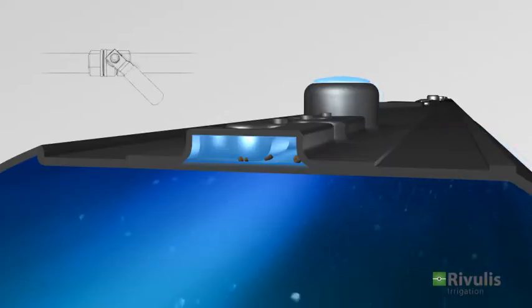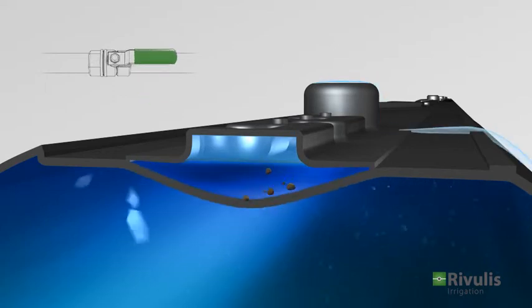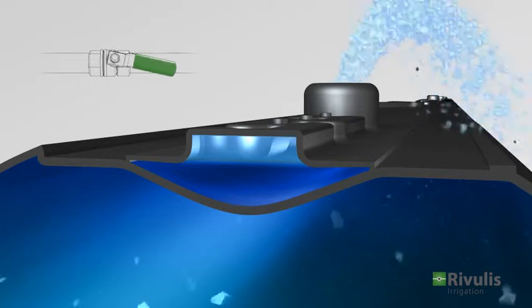During the flushing process, the flow rate is increased, causing the flexible flow channel to expand and effortlessly wash out the dirt particles.